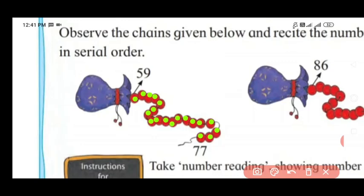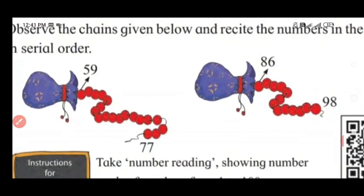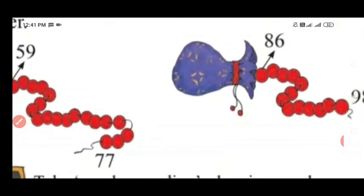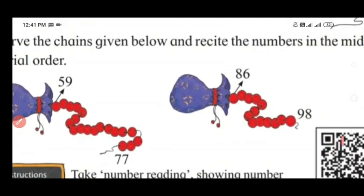Okay now we will look at the other number chain. This number chain has the first number 86 and the last number 98. Let's recite after 86 till the number 98.